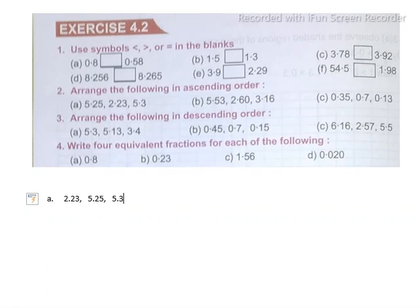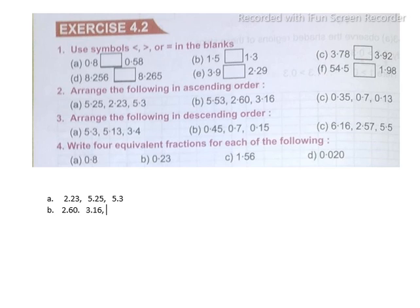Ascending order Part B: 5.53, 2.60, 3.16. The first and smallest number is 2.60. Next is 3.16. And the last number is 5.53.